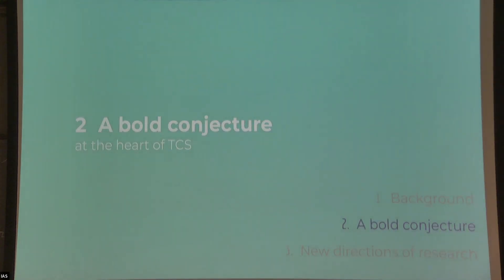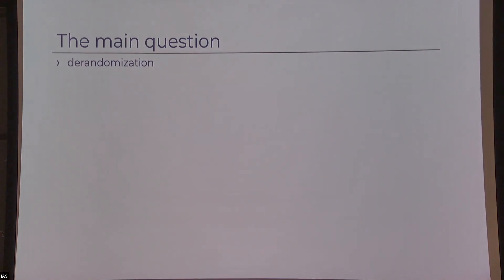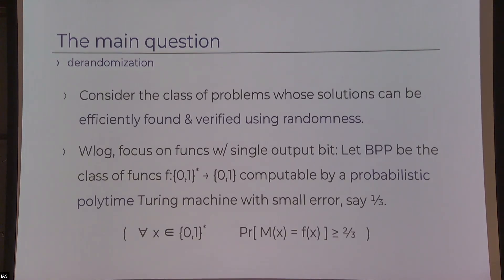Let's define formally a big conjecture. We consider the class of computational problems whose solutions can be found efficiently using randomness and verified efficiently. Without loss of generality in this context, it suffices to focus on functions with one output bit — just accept or reject.